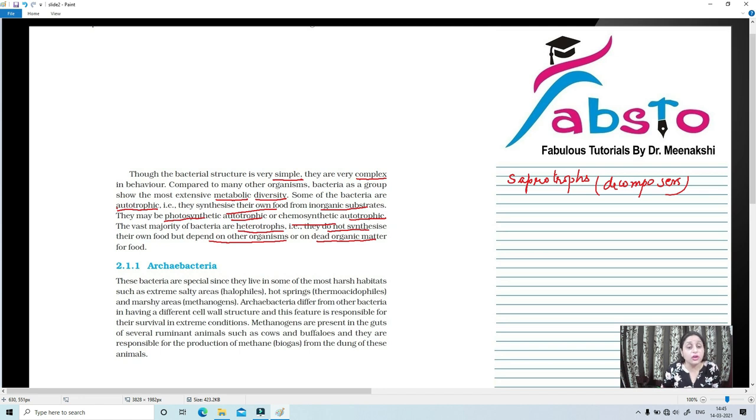Now, we are going to talk about different groups of bacteria. So, bacteria in Kingdom Monera are further classified into different groups. The first group that we are going to study is archaebacteria. So, what do you mean by archaebacteria? Archaebacteria means ancient bacteria. Ancient means which are present since very ancient times on this earth. Ancient bacteria we are going to talk about, that is archaebacteria.